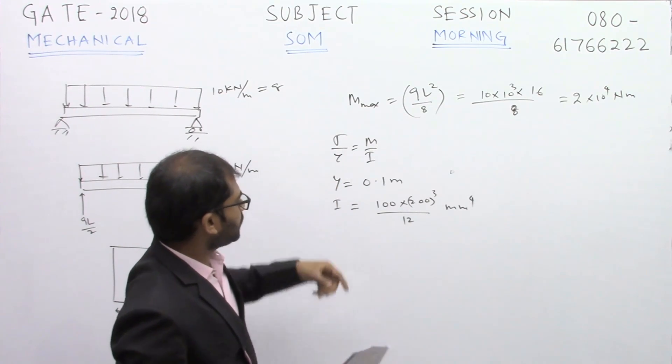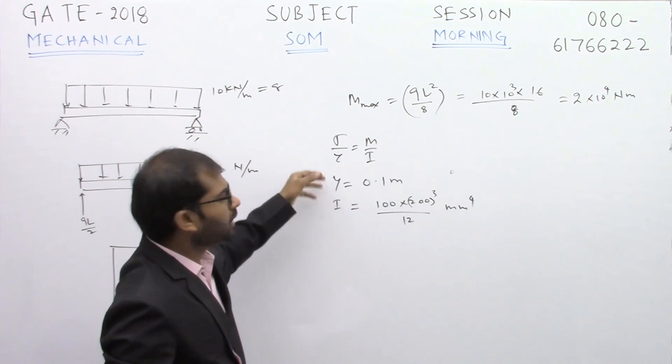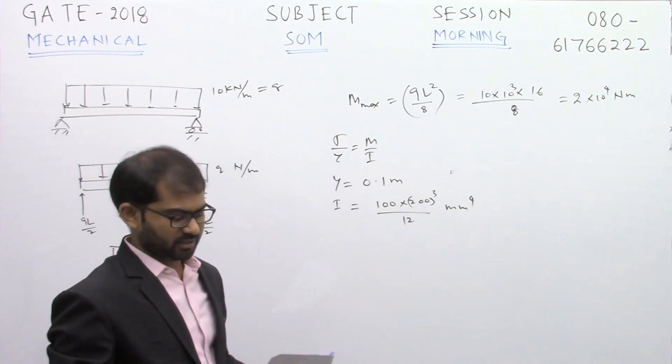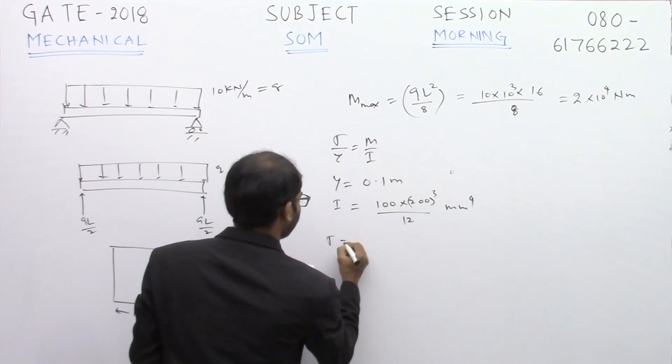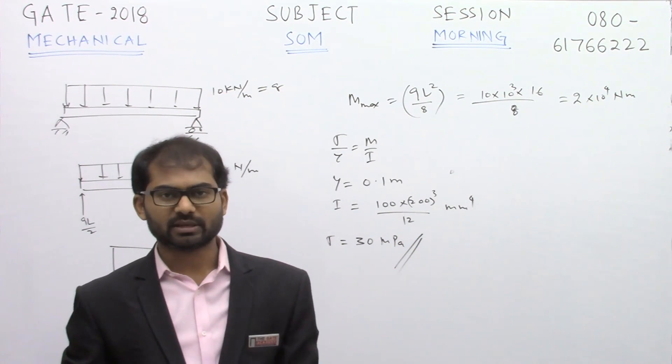If you substitute all of them with respect to units - better substitute everything in SI units only - then you will get sigma in pascals, which you have to convert to megapascals. Ultimately you will get sigma as 30 megapascals. You can check the calculations; the answer is 30 megapascals.